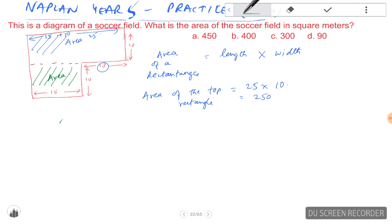The area of the bottom rectangle, this one here - we already know the length is 15 and width is 10, which gives us 150.